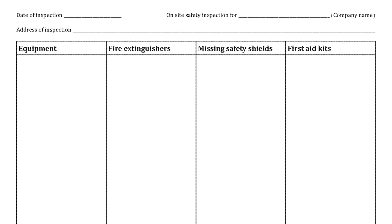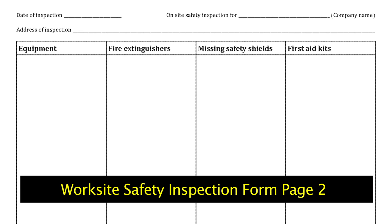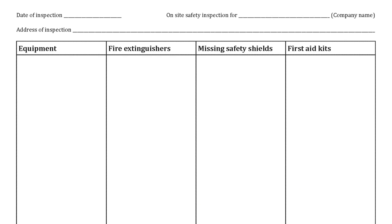This is the actual form itself — part of it, one page. It has the date of inspection, address of inspection, on-site safety inspection for the name of the company, the equipment that you inspect, the fire extinguishers, missing safety shields if any were found, and first aid kits.